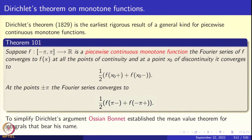Now we come to Dirichlet's theorem, which goes back to 1829 and is the earliest rigorous convergence result. This is the general convergence theorem for piecewise continuous monotone functions. Suppose f: [−π, π] → ℝ is piecewise continuous and monotone. The Fourier series of f converges to f(x) at points of continuity, and at a point x₀ of discontinuity it converges to the arithmetic mean of the right-hand limit and left-hand limit at x₀. At ±π, the Fourier series converges to one-half of [f(π−) + f(−π+)].